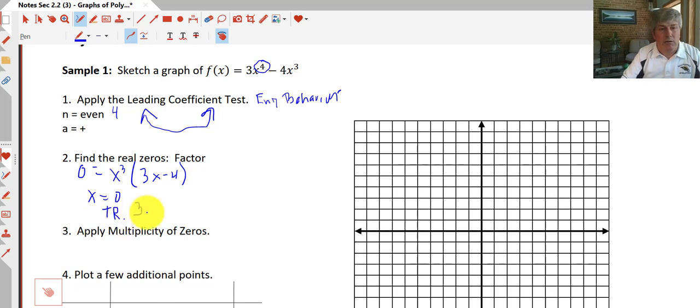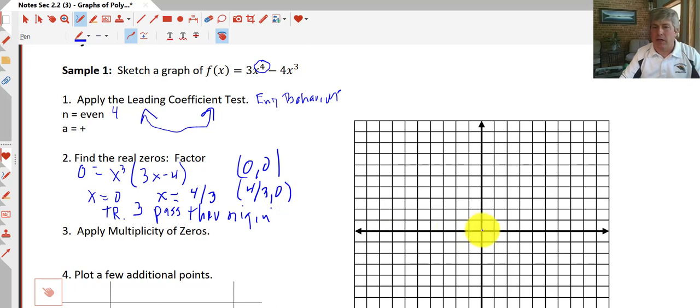So we have an odd number of roots at 0, so we know we're going to pass through the origin. And our other zero is at x = 4/3. So our zeros are the origin and (4/3, 0). So let's go ahead and plot those points.